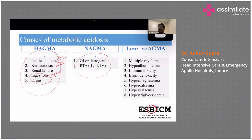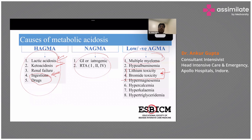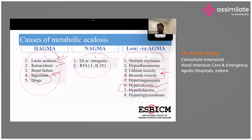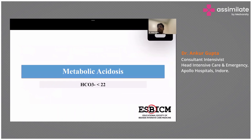Low anion gap, though not very common: multiple myeloma can present with negative anion gap; psychiatric patients on lithium and bromide-type drugs can develop toxicity. Hypercalcemia and hyperkalemia can at times cause negative or low anion gap which you can pick up from the ABG. These are the causes of metabolic acidosis.